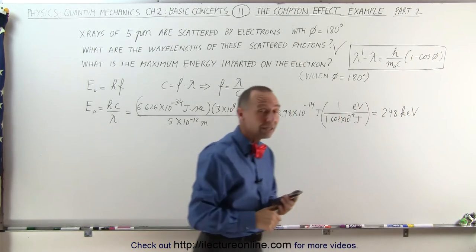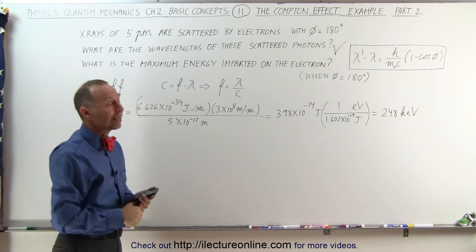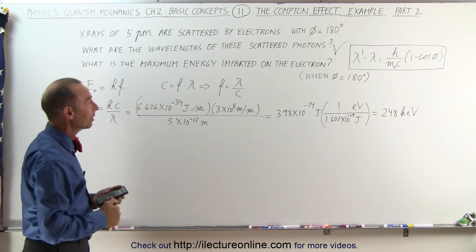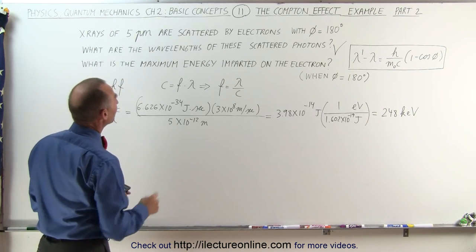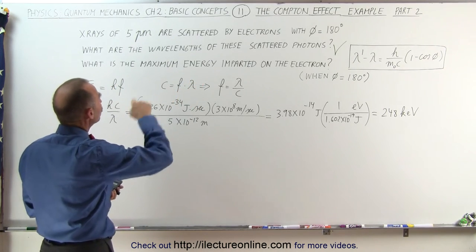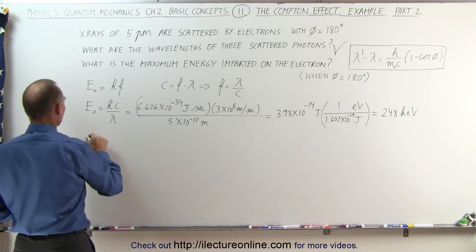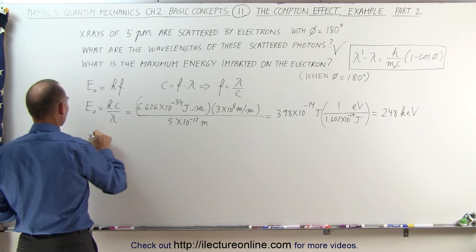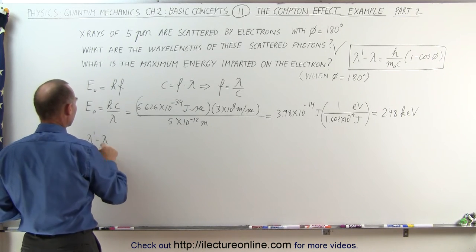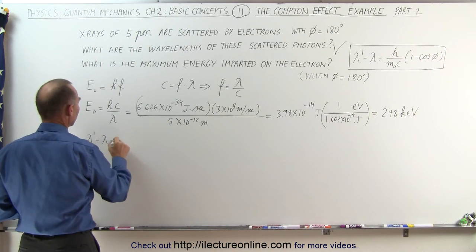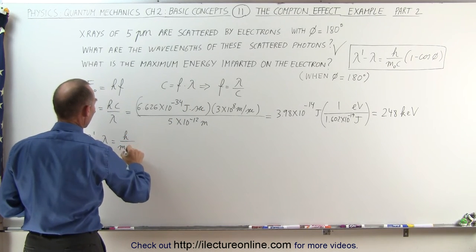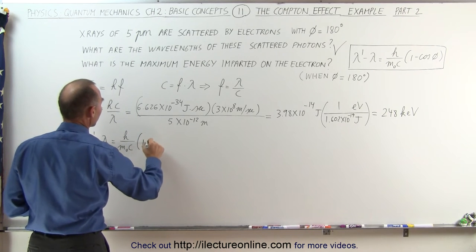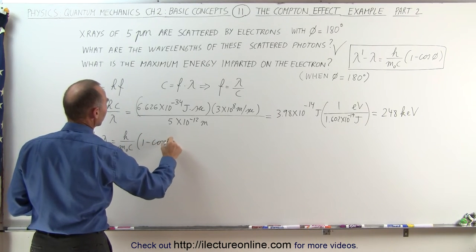Now that's quite energetic, and that is almost half the rest mass of an electron. Now let's find out with the scattering angle what the change in the wavelength would be. We could say that lambda prime minus lambda, the change in the wavelength, is equal to h over m_e c times 1 minus the cosine of 180 degrees.